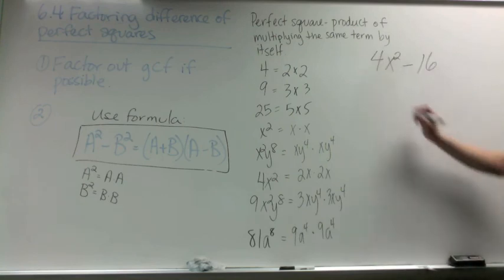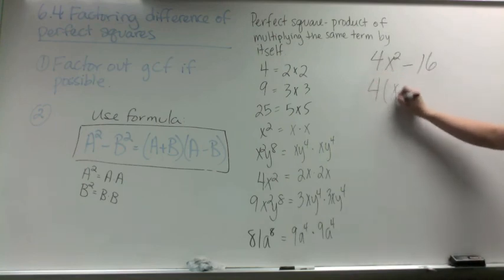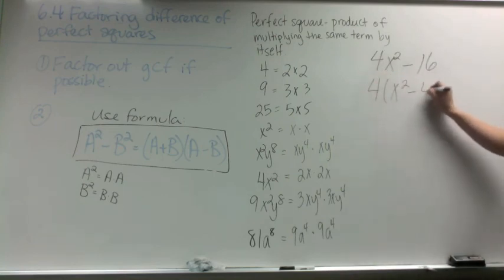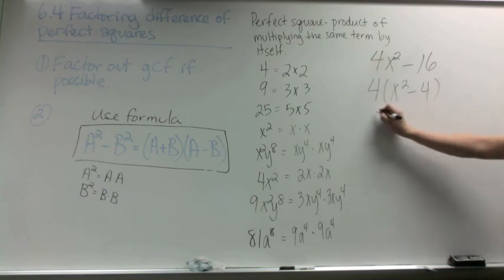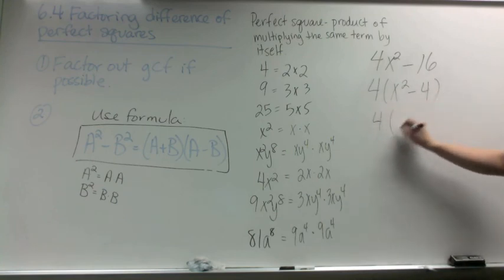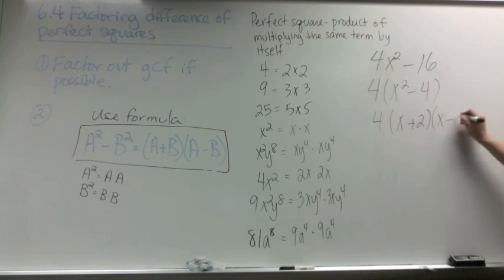In our last example, we're going to factor out the GCF, which is 4, then factor the difference of perfect squares. We'll get x plus 2 and x minus 2.